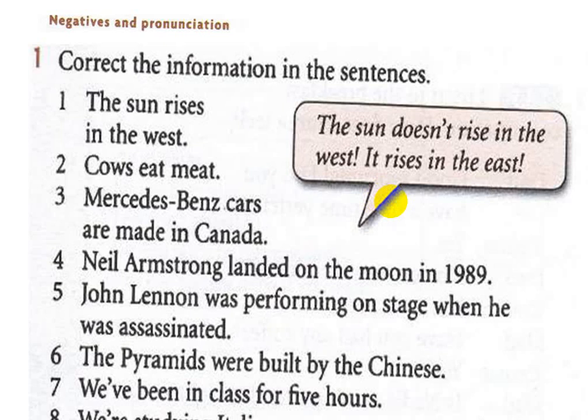Number four: 'Neil Armstrong landed on the moon in 1989.' In negative, it becomes 'Neil Armstrong didn't land on the moon in 1989.' When we made it negative, we omitted the '-ed' of the verb because we used the auxiliary verb 'did' with this sentence.